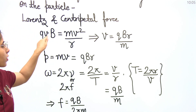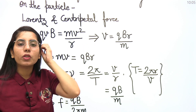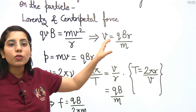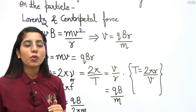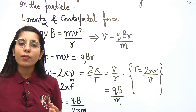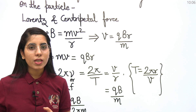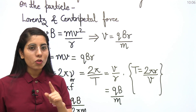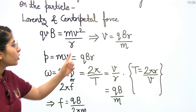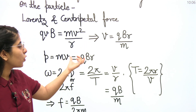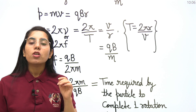From V = QBR/M, we can find momentum: P = MV = QBR. For angular velocity (omega), recall omega = 2pi·nu = 2pi/T. The time period T for circular motion equals the circumference 2piR divided by velocity V. Substituting T = 2piR/V into the omega expression gives V/R. Then substituting V = QBR/M, the R cancels and you get omega = QB/M, which is a very important expression.